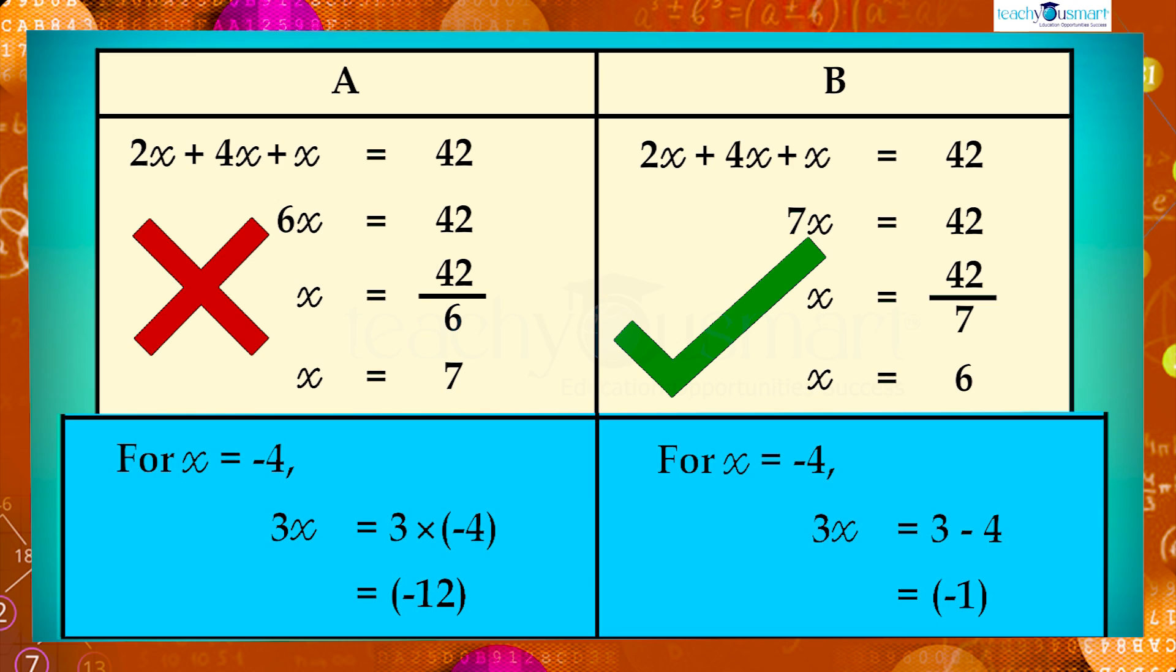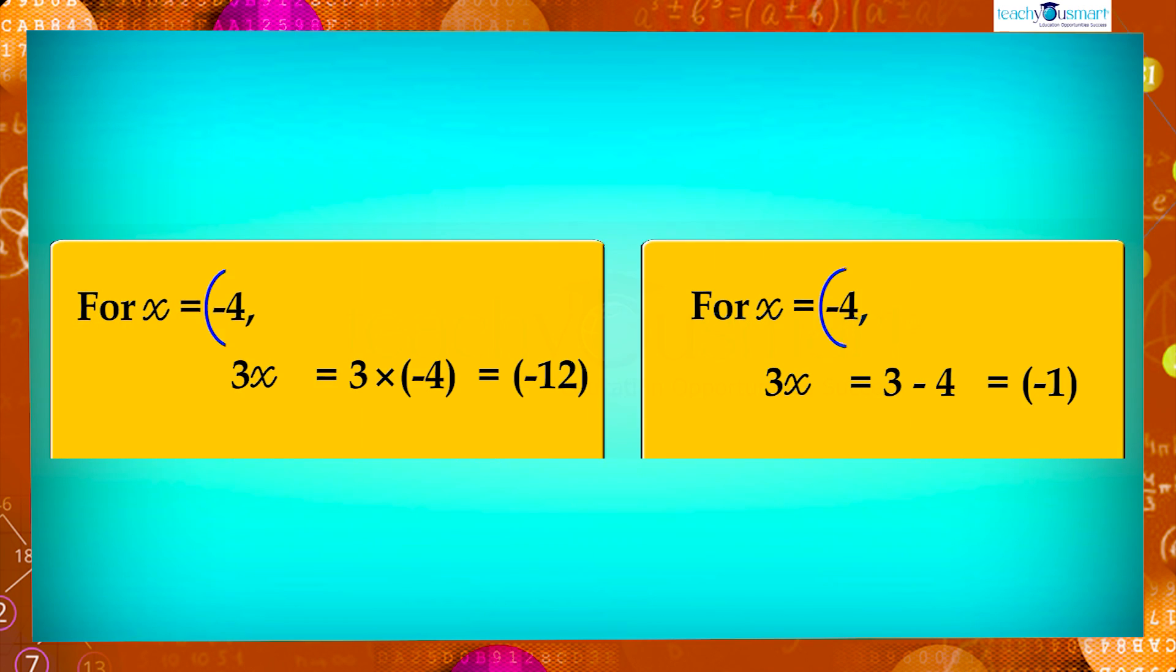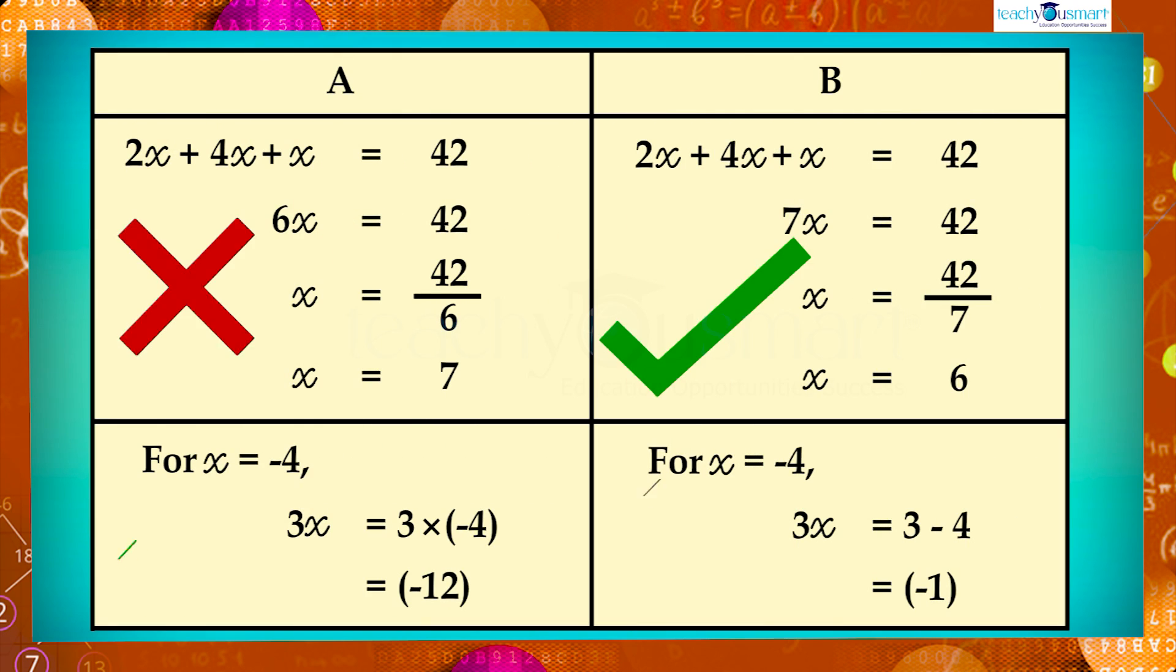Now we go to the next problem. First we remind that 3x means 3 multiplied by x. When we substitute a negative value, make sure that the negative number should be kept in the bracket. That is 3x equals 3 multiplied by minus 4, which is equal to minus 12. Now we can say A is correct and B is incorrect.